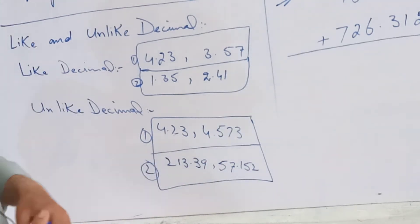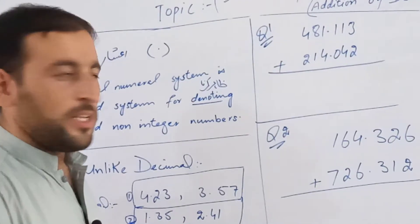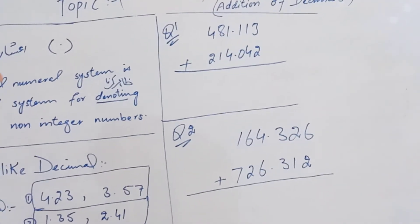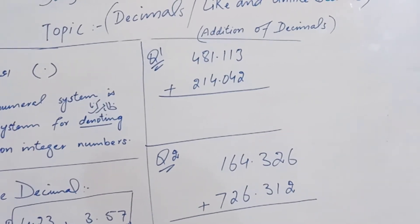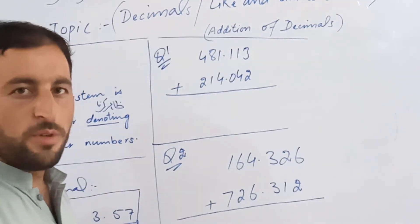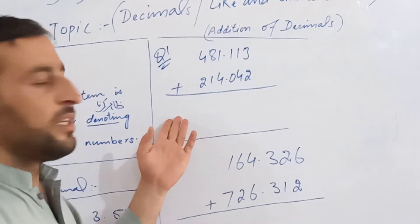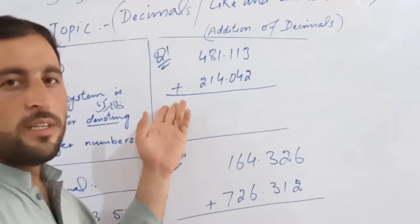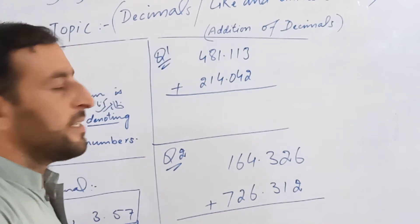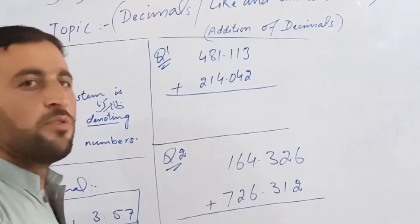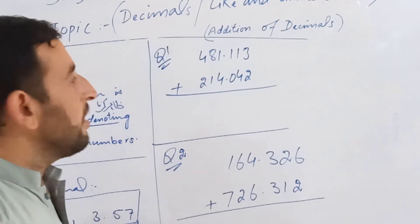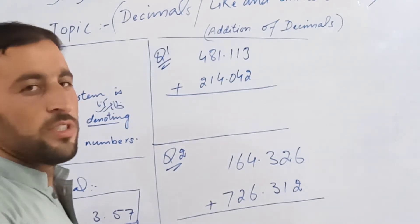We will start with all dimensions that we are clear. What is the addition of decimals? We will have a question from the front. If we get any question, we will have a question called decimals, from the right side of the unit.